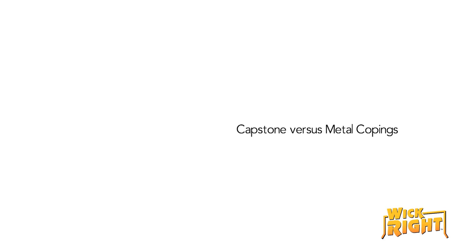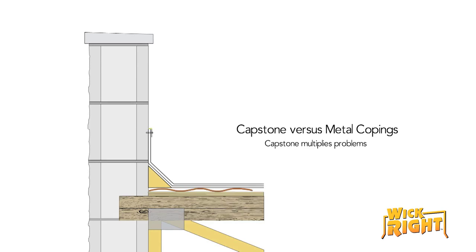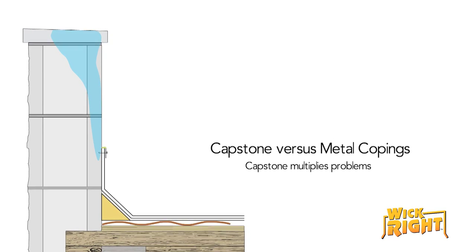If the building has capstones on top instead of metal copings, the problem is multiplied tenfold. While capstones look great, they are extremely porous. If they are not flashed properly, capstones allow a great deal of water directly into the wall.